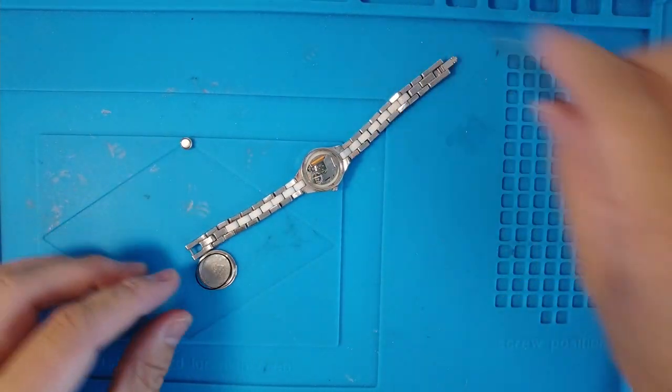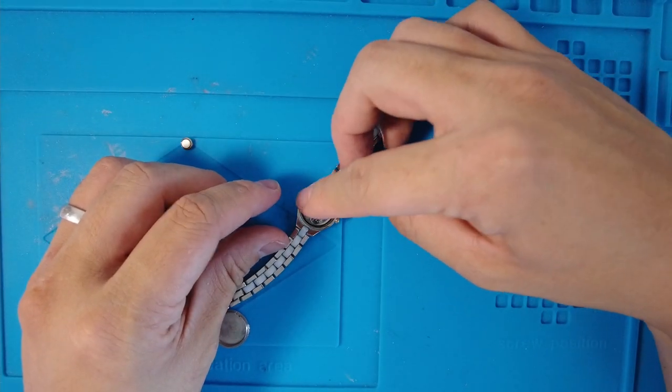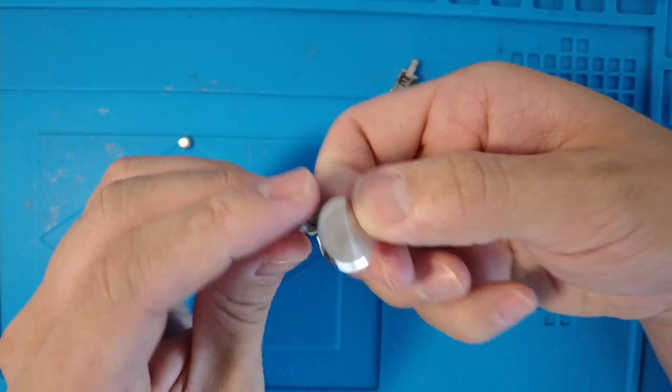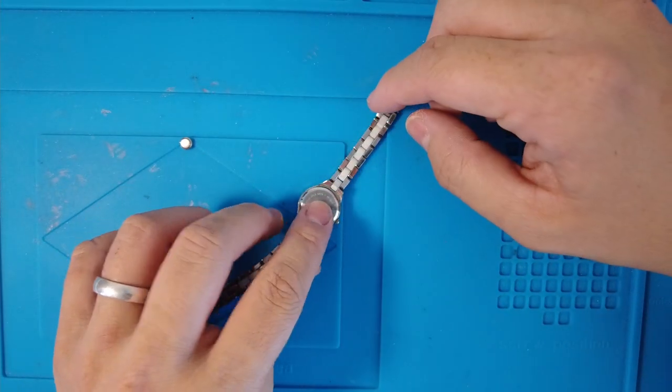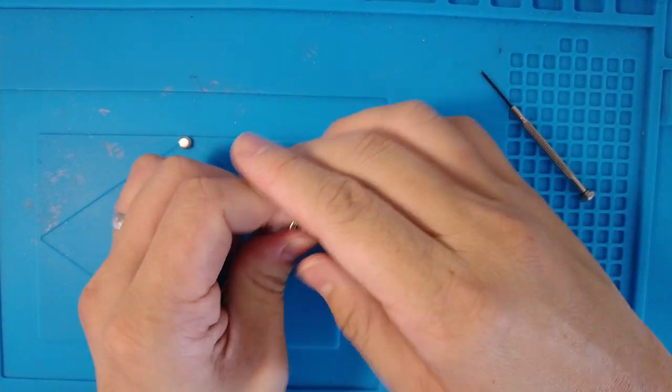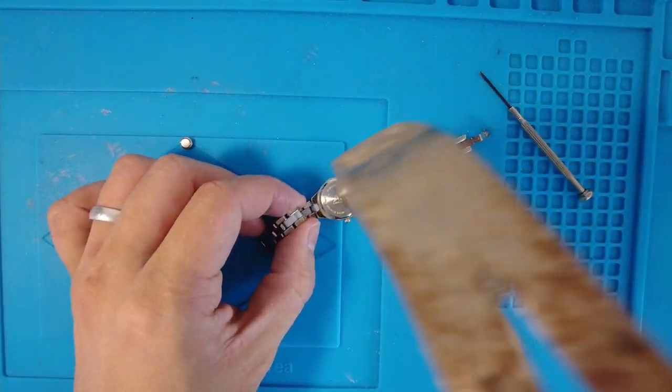That pushes in just like that. Then we're going to take our rubber seal, put it around the edge, and I'm going to place this cover back on so that this is facing this direction here. Push that in and give it a very gentle tap.